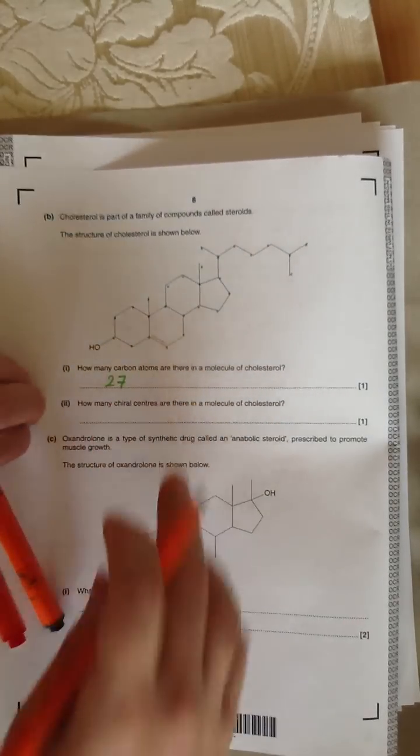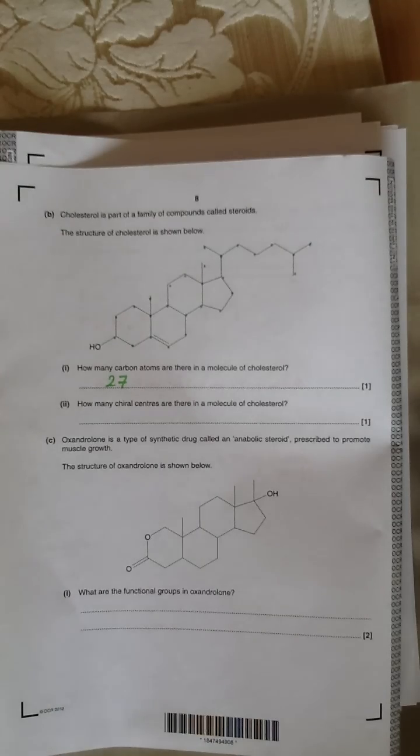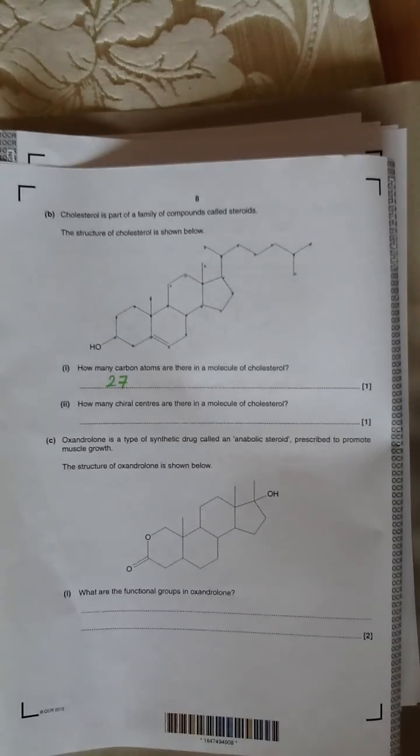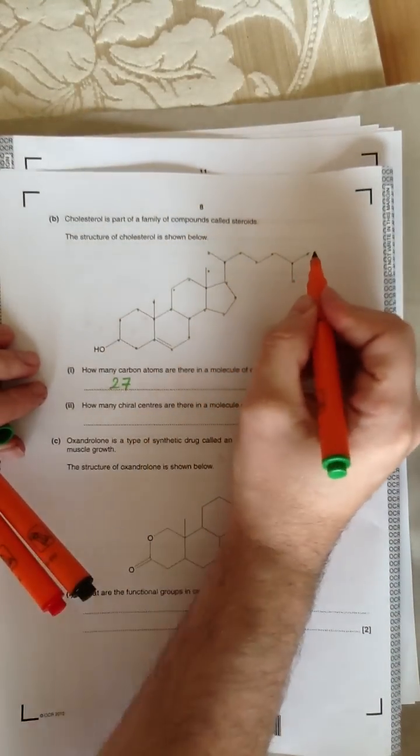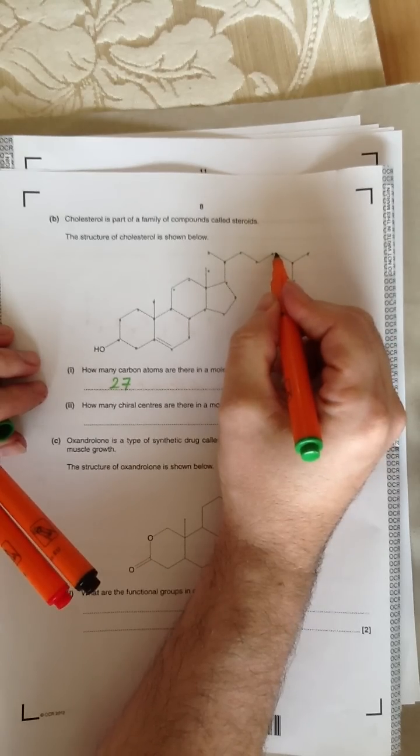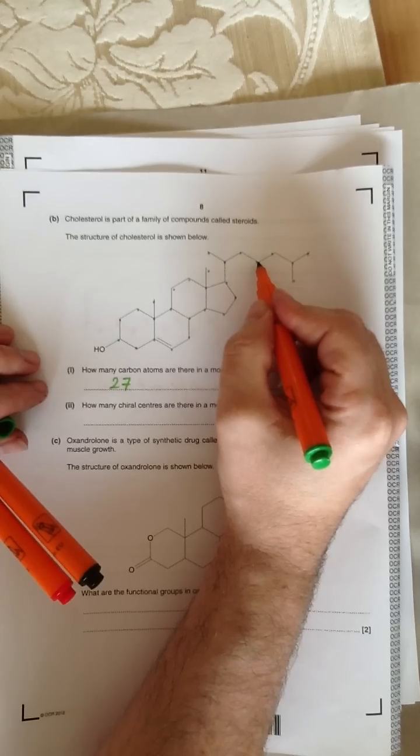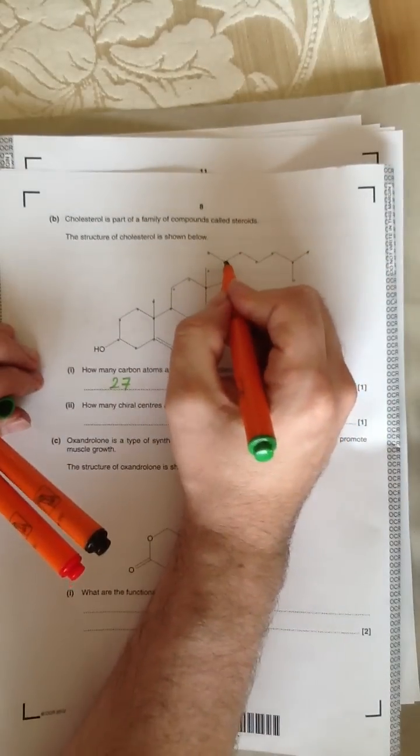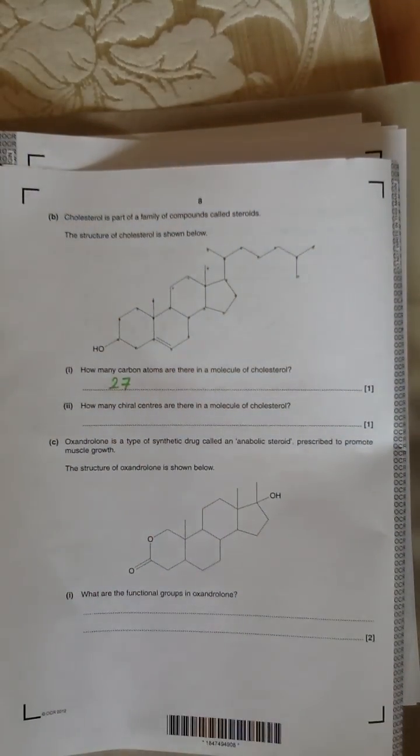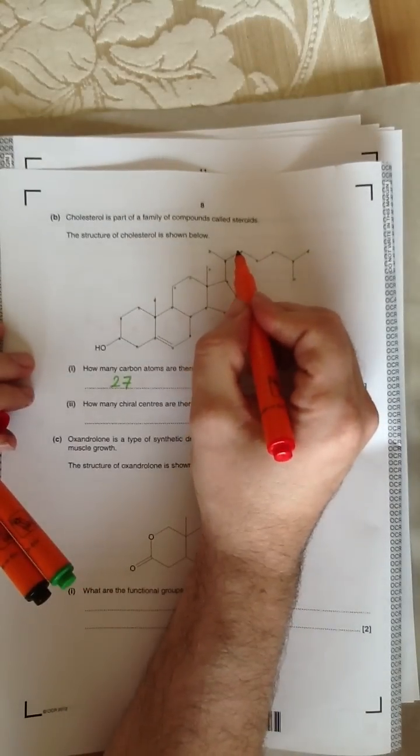Because it says how many chiral centres are there in a molecule of cholesterol. I'm going to have to count the number of chiral centres. Remember a carbon atom is chiral, a centre is chiral, if it has 4 different substituents, 4 different things coming off that carbon. That's not chiral because it's got CH3 and CH3. That's not chiral, it's got 2 hydrogens. That's not chiral, it's got 2 hydrogens. That's not chiral, it's got 2 hydrogens.